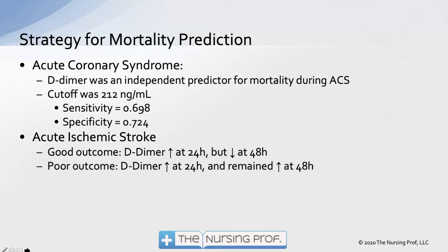D-Dimer as a strategy for mortality prediction: in acute coronary syndrome, D-Dimer was found to be an independent predictor of mortality. The cutoff used was 212 — much lower than the cutoff for determining whether a patient could have a PE, because smaller clots produce a smaller number. Sensitivity is about 70 percent and specificity is about 70 percent as well, so we'll detect about 70 percent of them, and about 30 percent of the time we'll be wrong.